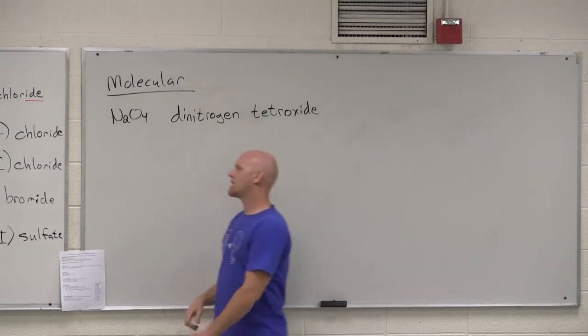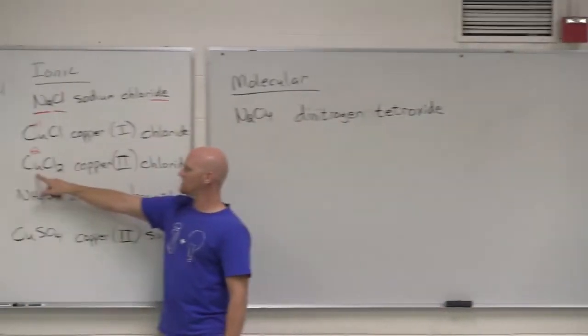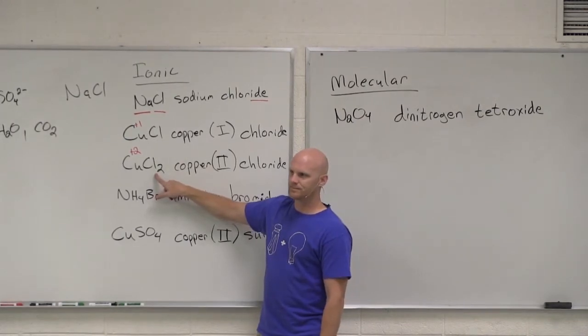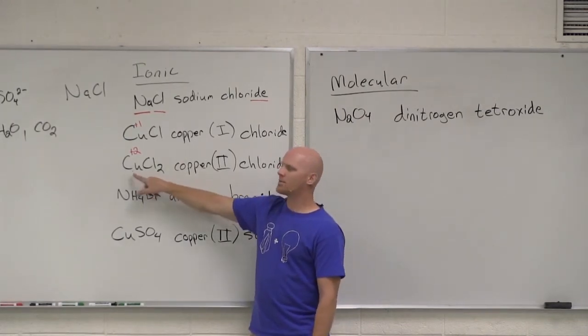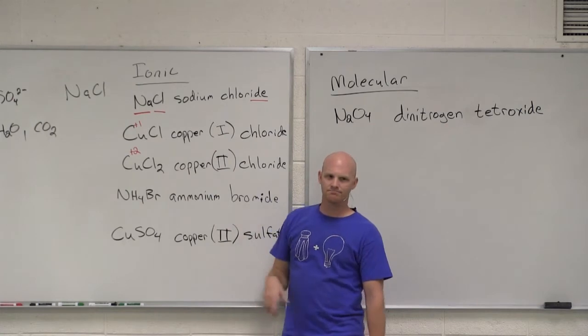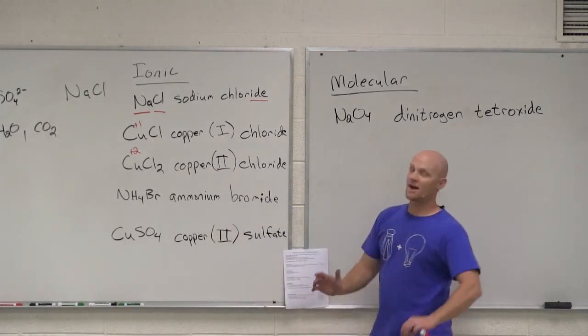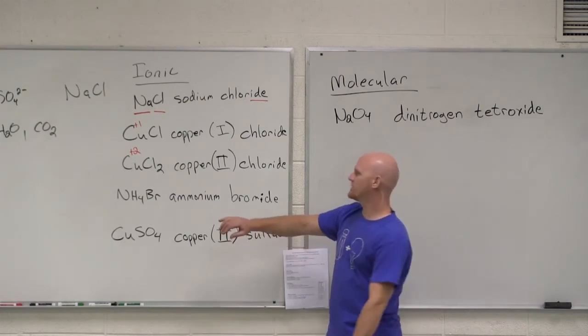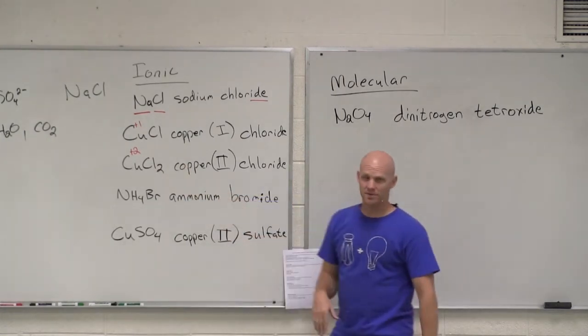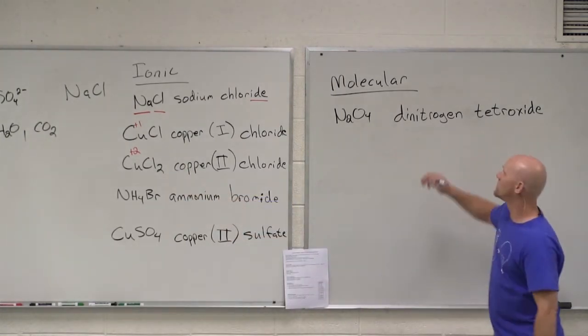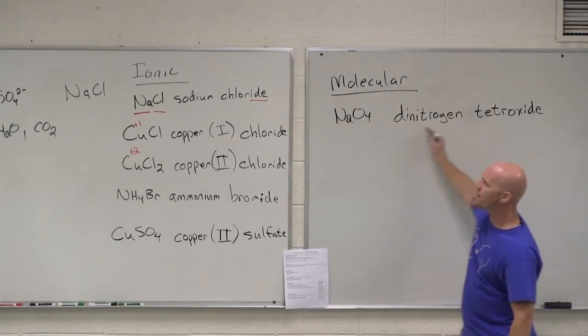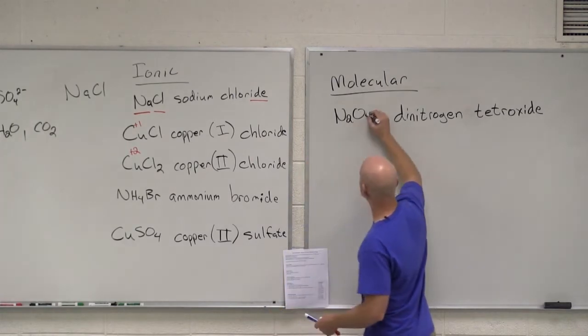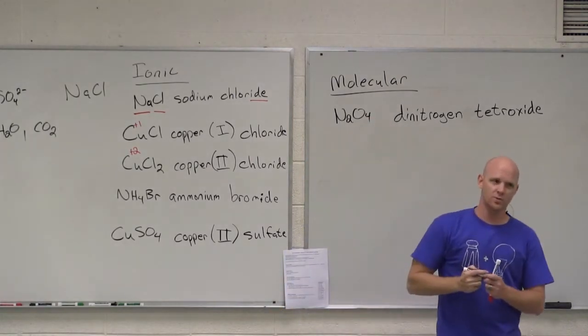This is easier, but because now we have two systems, a lot of people would go back here and look at CuCl2 and name it incorrectly as copper dichloride. Technically back in the day they used to call it that, but now it's improper and would be technically incorrect. Don't use the rules from molecular compounds for ionic and vice versa.